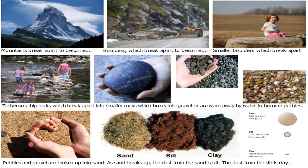This picture shows how soil is formed. The mountains break apart to become boulders, which break apart to become smaller boulders, which break apart to become big rocks, then smaller rocks, and then gravel, carried away by water to become pebbles. Pebbles and gravel are broken up into sand. This process is called weathering. Based on texture and structure, soil is categorized as sand, silt and clay. Sand ranges from 0.05 to 2 mm, silt ranges from 0.002 to 0.05 mm and feels very soft and smooth, and the finest is clay.